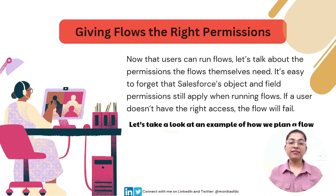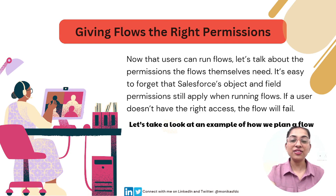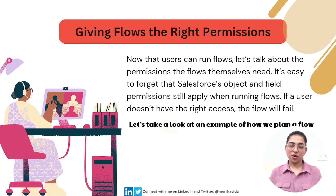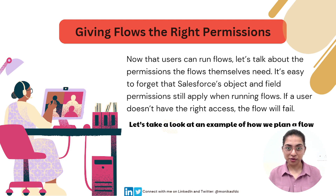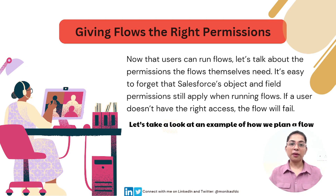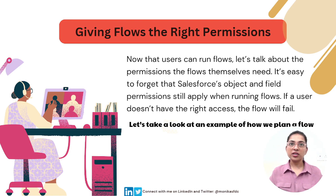Now the second point: giving the flow the right permissions. Now that users can run the flow, let's talk about the permissions the flows themselves need. It's easy to forget that Salesforce object and field permissions still apply even with automation running. If a user doesn't have the right access, the flow will fail. For example, if my flow creates an opportunity but the running user doesn't have permission to create or edit an opportunity, the flow will eventually fail.